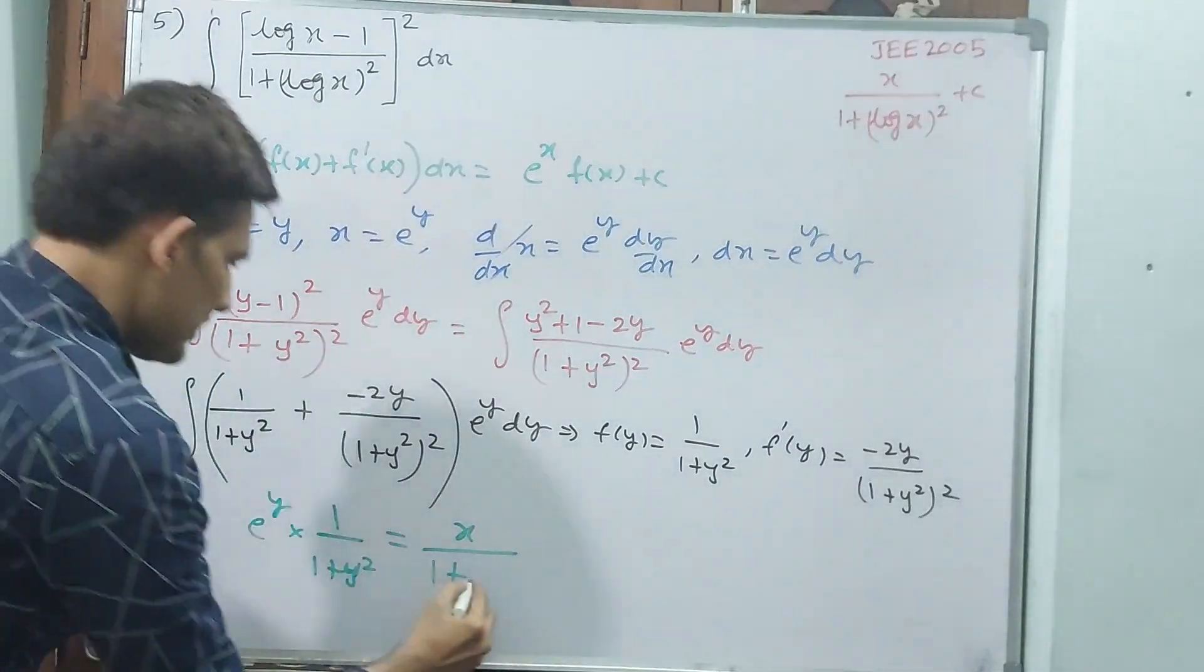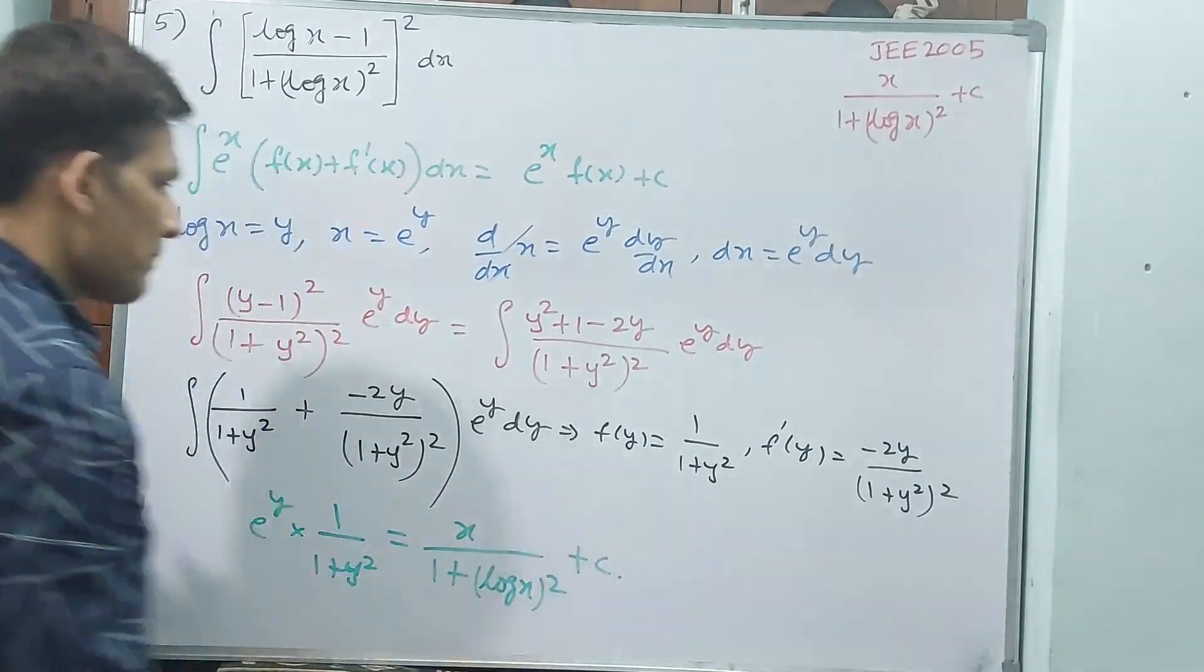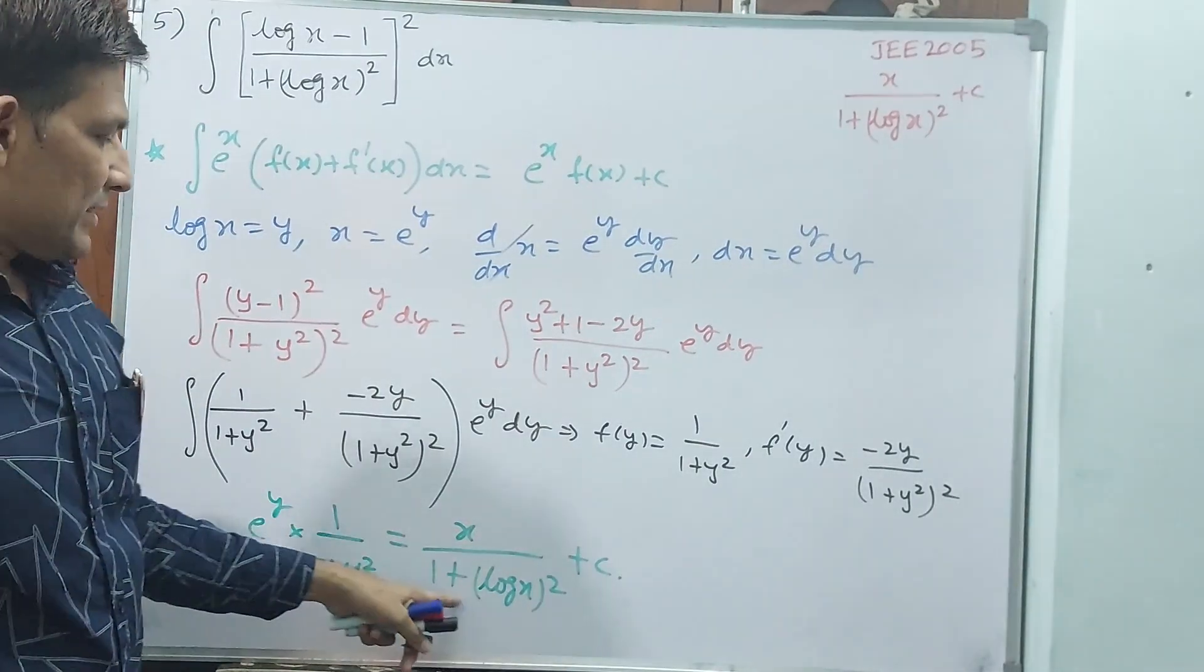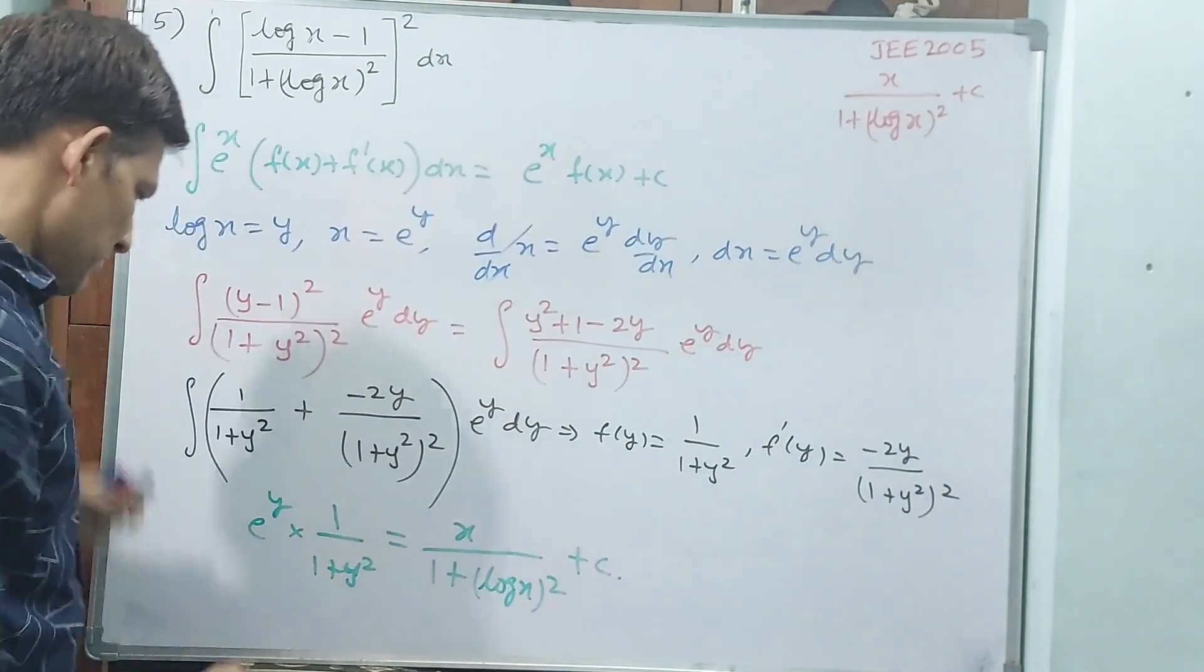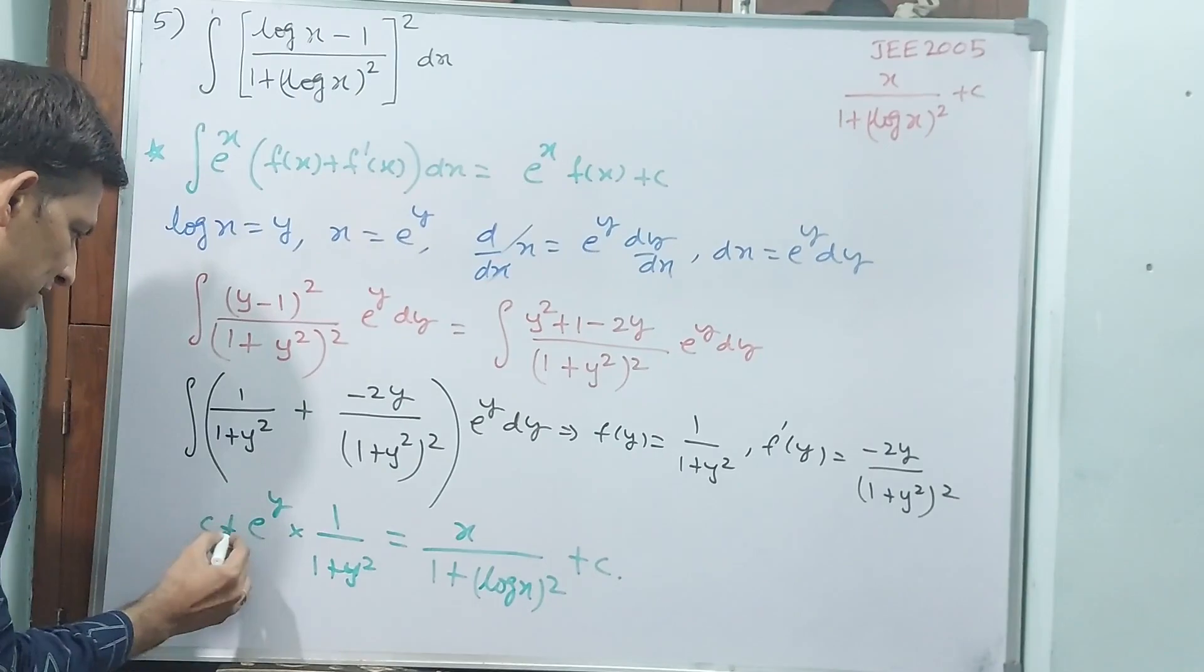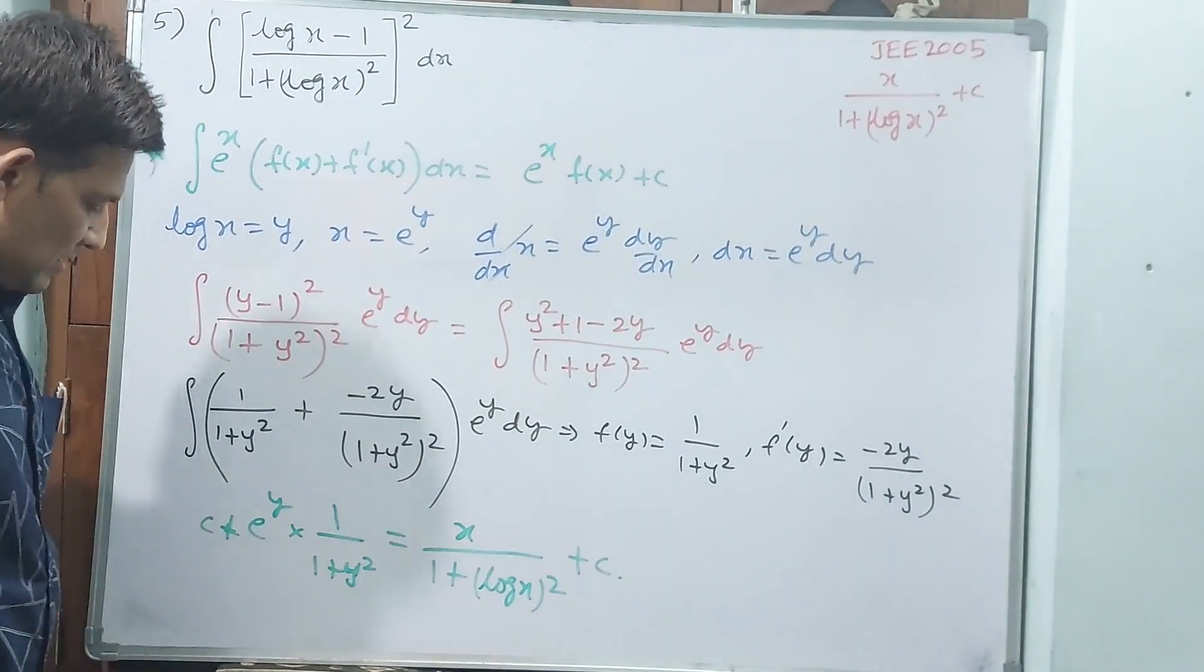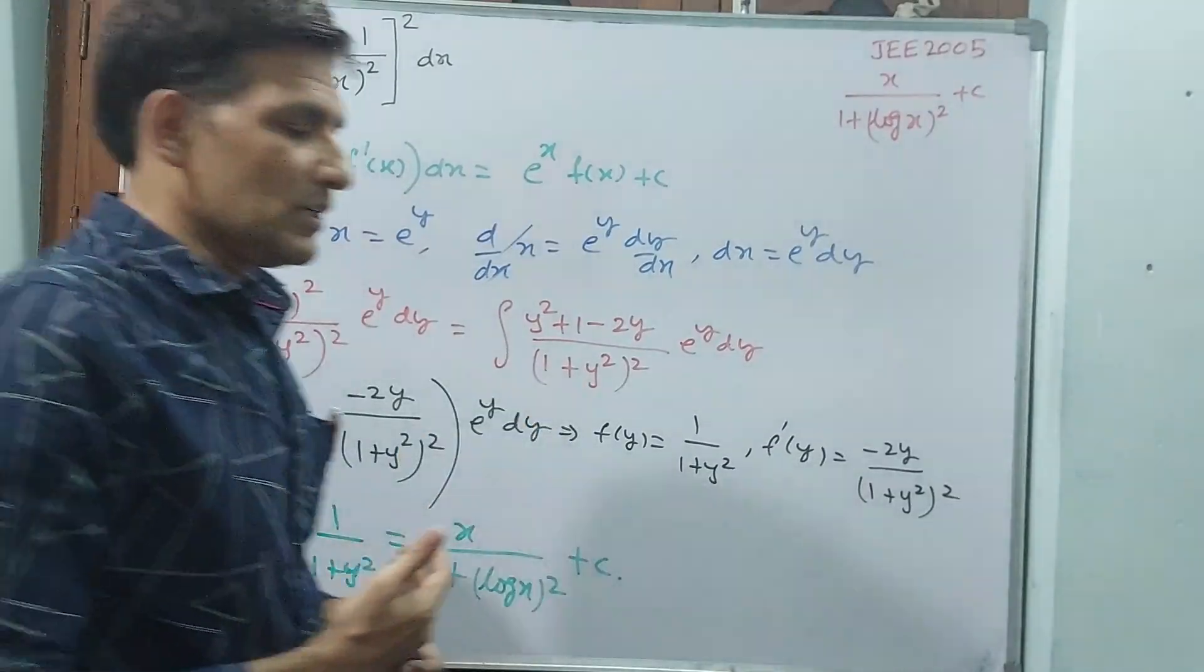y square what you can write? log x whole square. x by 1 plus log x whole square plus c. If you have not written plus c earlier, you write plus c here. That is not a problem. Plus c can be written first or last.